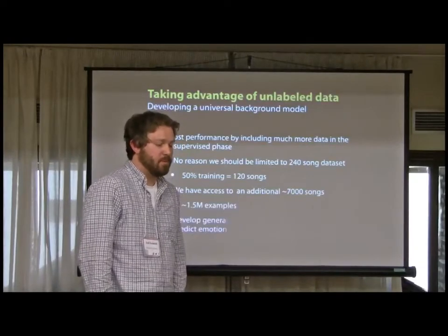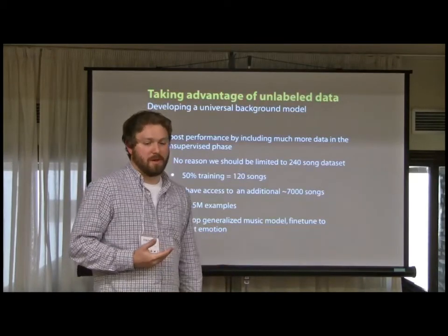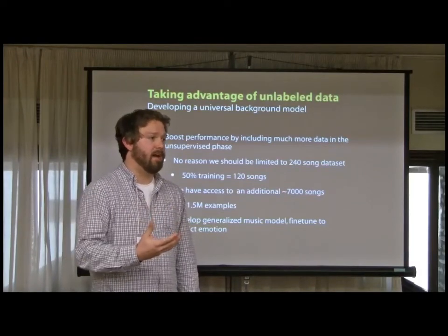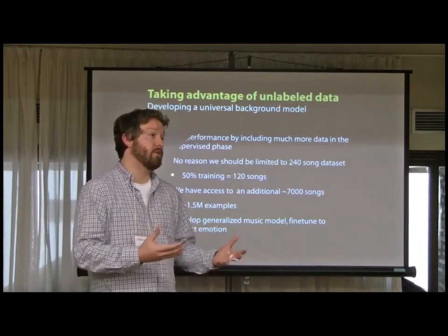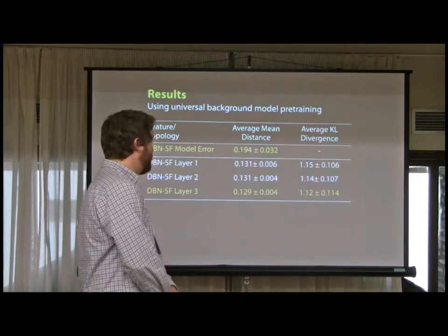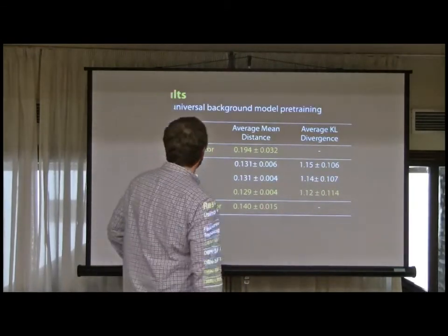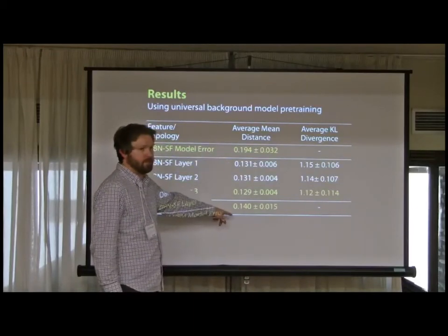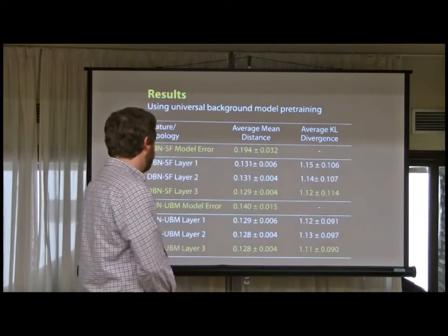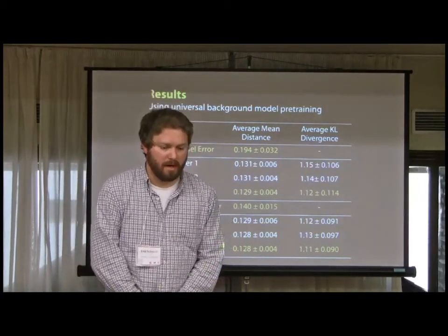One of the great things about RBMs being unsupervised is we don't have to just use our small training dataset in the unsupervised phase. We have access to a much larger library of about 7,000 songs — about 1.5 million examples when aggregated. So why not start with that, develop a really general model of music, and then tune the music model to emotion. What we've seen is we do get performance gains. The biggest increase is in the model prediction — from 19.4 down to 14%, which is pretty significant. For individual features, the change is smaller, just from 12.9 down to 12.8.